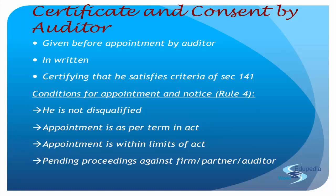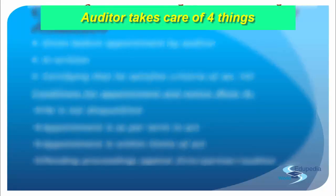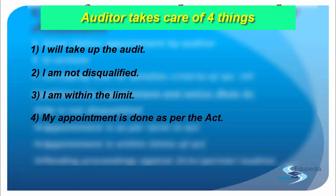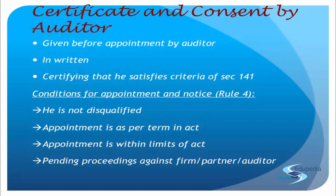That means you have already specified all proceedings in respect to professional conduct that are against you. That way, the company has the entire justification when they evaluate you as an auditor — okay, even if there was a proceeding pending, it was not major, it is this and this, and it is acceptable to the law and the act. So that is why when the auditor gives his consent, the auditor takes care of four things: yes I will take up the audit; I am not disqualified; I am within the limits; my appointment is done as per the Companies Act; and this is the list of all pending proceedings against me.